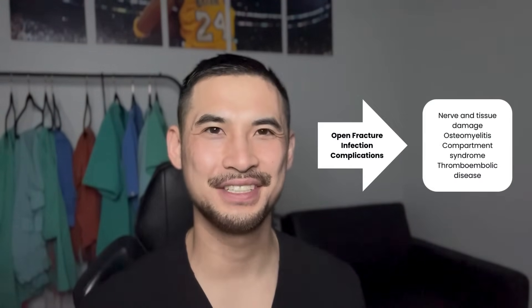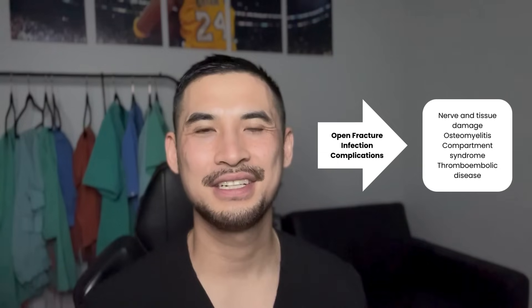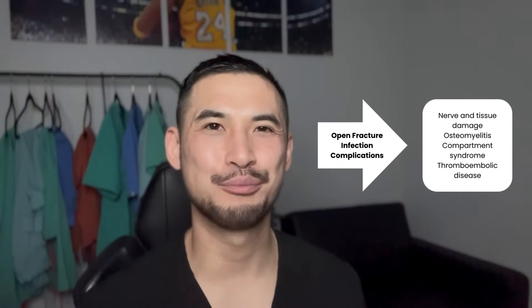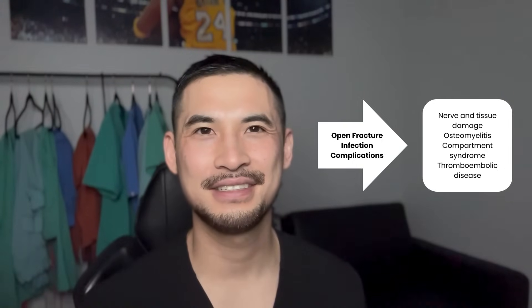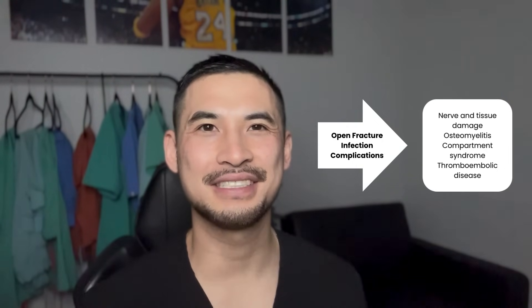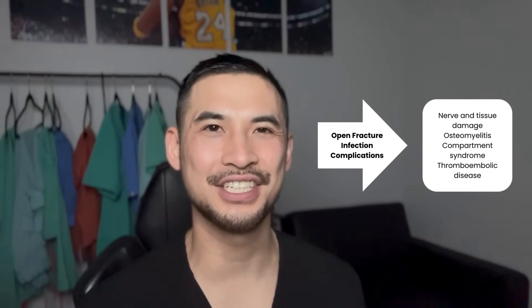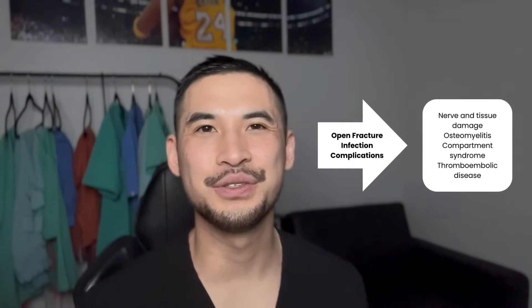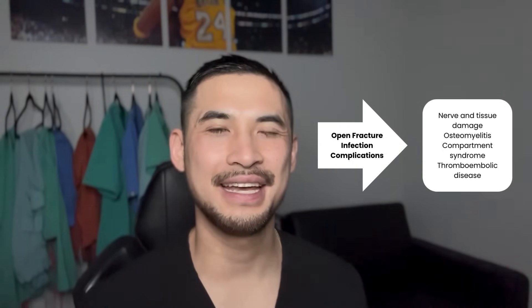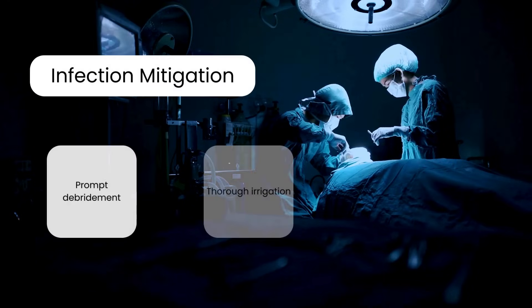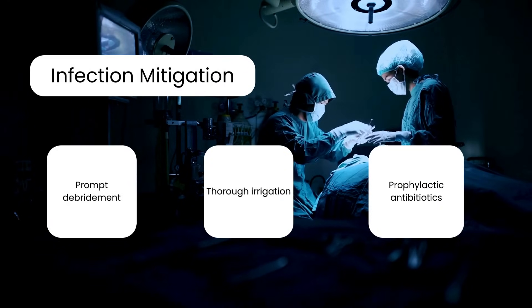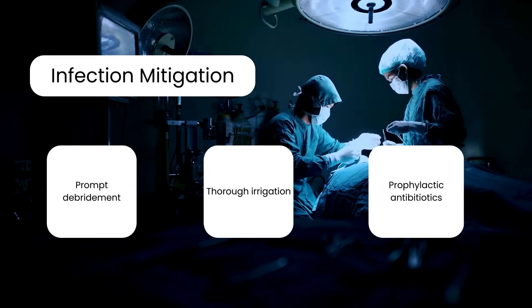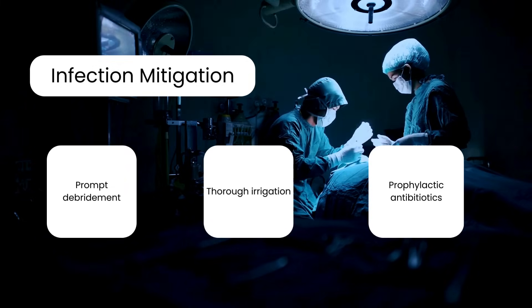Complications that arise from infected open fractures include nerve and tissue damage, osteomyelitis, compartment syndrome, and thromboembolic concerns. Prophylactic antibiotics have shown to reduce the incidence of infections. Strategies to minimize open fracture infections consist of prompt debridement, thorough irrigation, and prophylactic antibiotics.